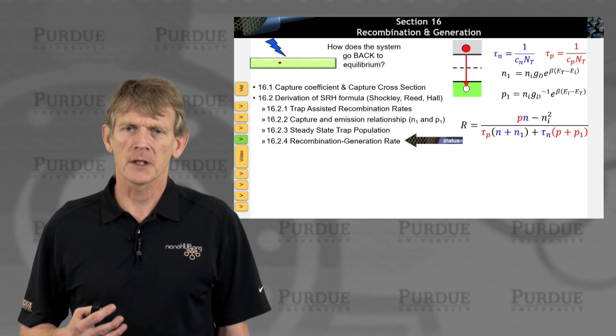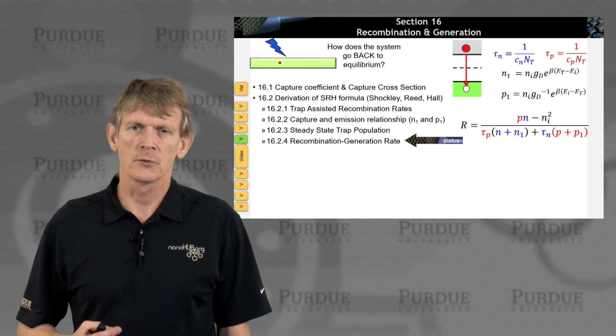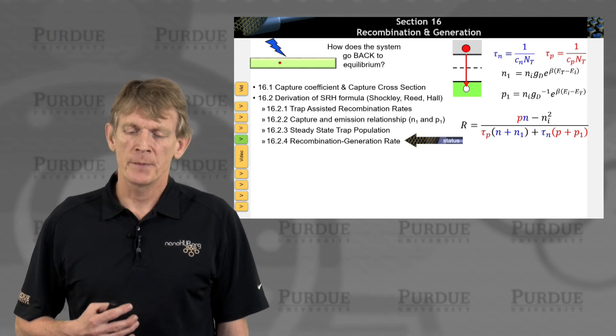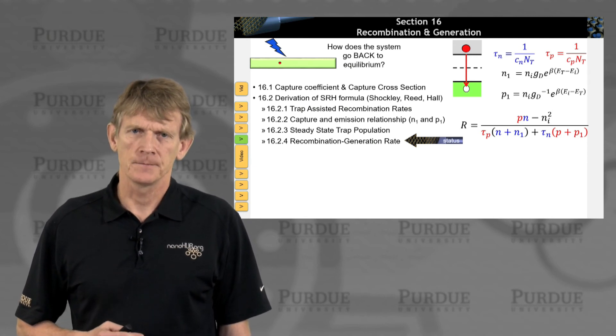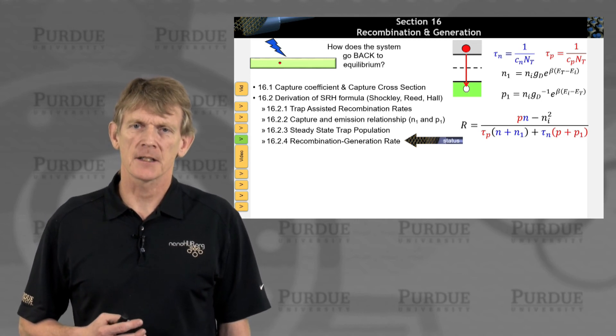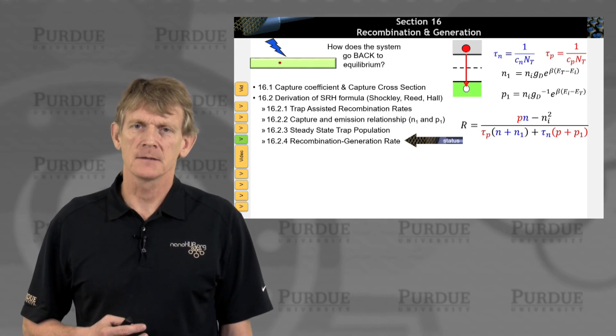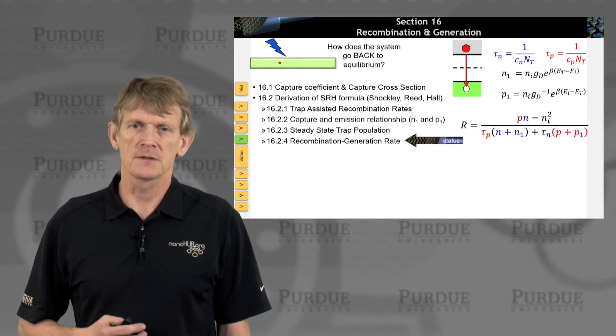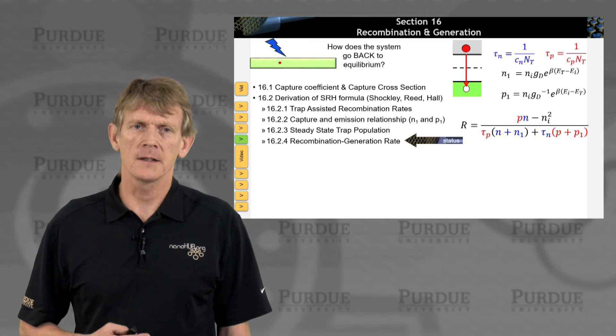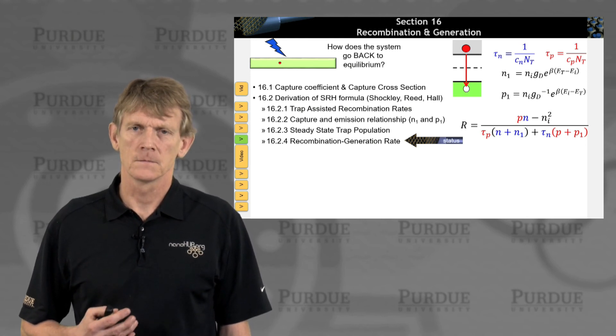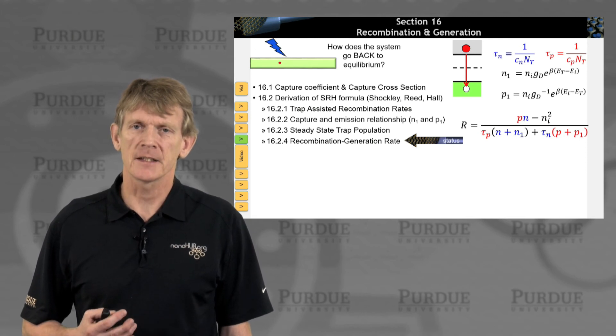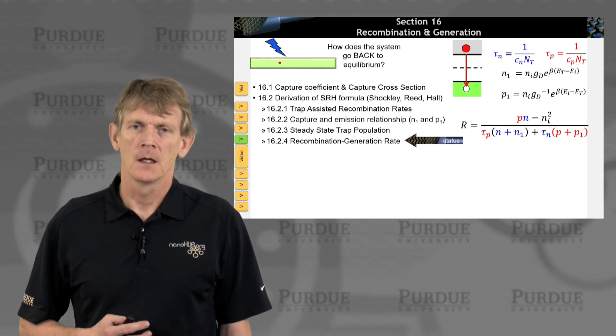And I'd like to just drive home a couple of points here at the conclusion of this section. Now, look at Pn minus Ni squared. At equilibrium, you have the law of mass action which says Pn is Ni squared. So it's zero. If you are at equilibrium, capital R is zero. No net recombination in equilibrium.